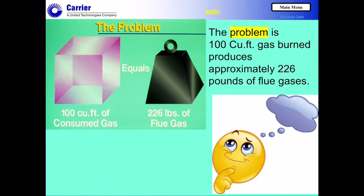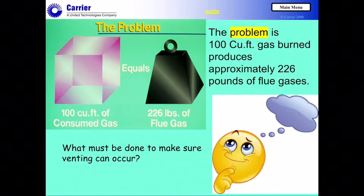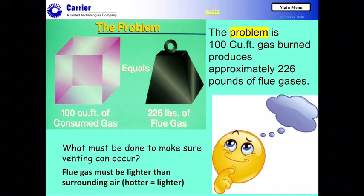Let's look at some problems associated with venting. If I consume 100 cubic feet of gas, that's not a lot of gas, but it would produce roughly 226 pounds of flue gases — that's an awful lot. So what do we need to do to make sure we can move 226 pounds of flue gases? The first thing that has to happen in any venting system is you've got to make the flue gases lighter than the surrounding air. The hotter they are, the lighter they are — it's really a matter of density.